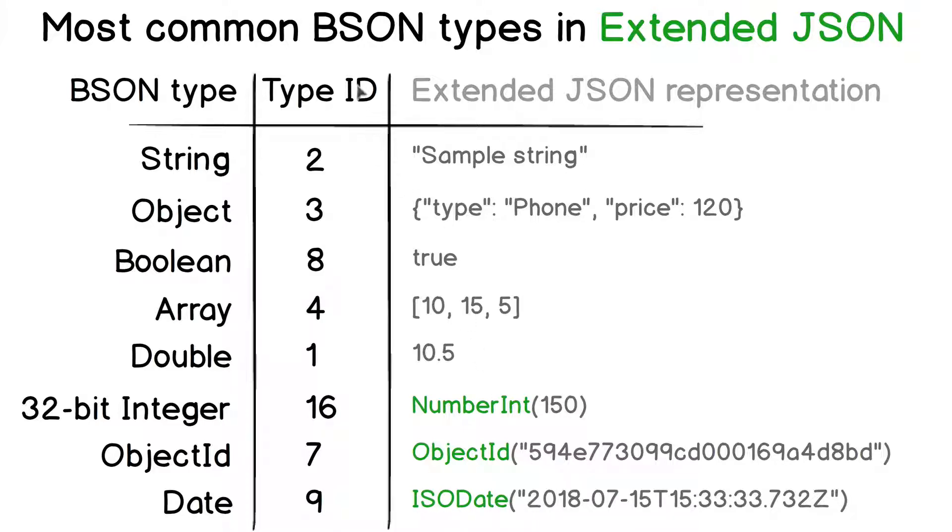But what do those BSON type IDs mean? Where are they used? Let's look at this next. See you in a second.